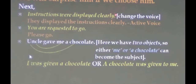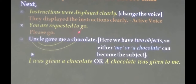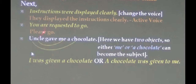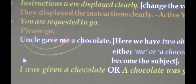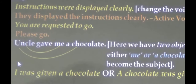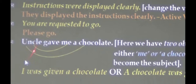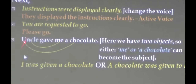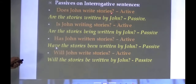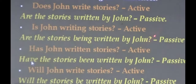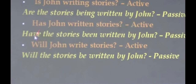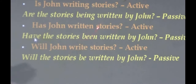More examples: 'Instructions were displayed clearly' → active: 'they displayed the instructions clearly.' 'You are requested to go' — passive; active is 'please go.' 'Uncle gave me a chocolate' — there are three nouns. You may carry either 'me' or 'chocolate' forward. If you carry 'me': 'I was given a chocolate by uncle.' If you carry 'a chocolate': 'a chocolate was given to me by my uncle.' For questions: 'Does John write stories?' → 'Are the stories written by John?' 'Is John writing stories?' — ING, so 'being' → 'Are the stories being written by John?' 'Has John written stories?' — present perfect → 'Have the stories been written by John?' 'Will John write stories?' → 'Will the stories be written by John?'